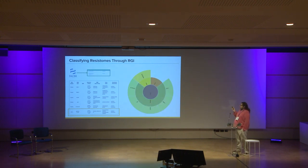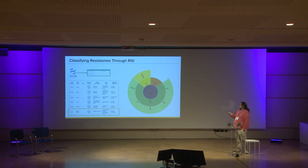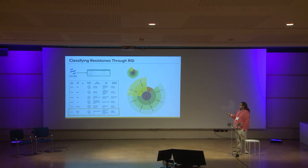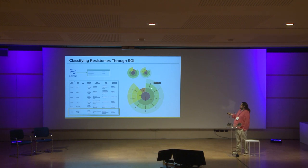RGI also produces visuals annotated by the Antibiotic Resistance Ontology. There's a gene-by-gene view showing perfect and strict hits. With the ontology annotations, you can also break this down by AMR gene family — you can see that a strict hit belongs to multiple gene families because it confers resistance to multiple drug classes. You can also view by drug class: both OXA-1 and NDM-1 beta-lactamase are types of carbapenemases, so they get binned together in the drug class view, broken down for each drug class associated with the sample.